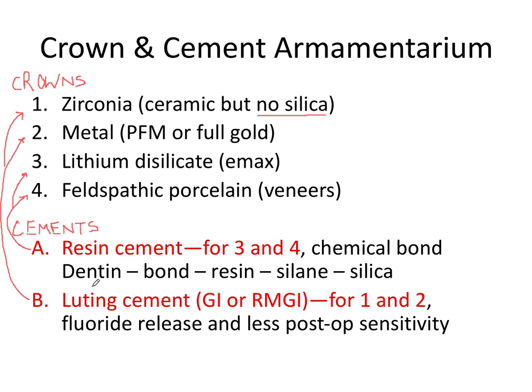I've also listed the layers in order of application for using resin cement. If we're in the enamel layer of the tooth—say for a veneer utilizing an intra-enamel preparation—we want to etch with phosphoric acid. Otherwise, we don't want to etch the dentin. So we start with the dentin or etched enamel of the tooth, then place primer and/or a bonding agent.